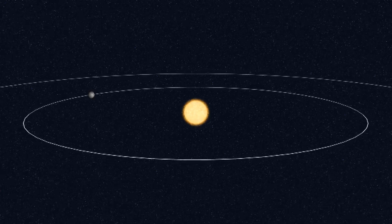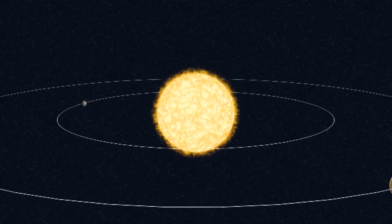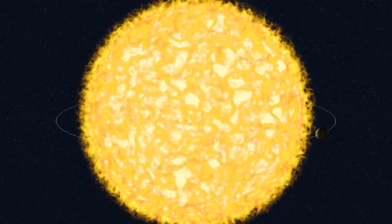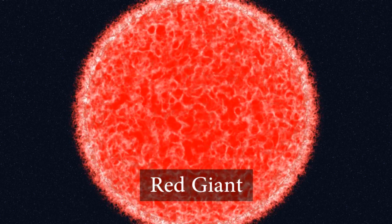The Sun will expand. Its radius will expand 200 times over. It will grow past the orbits of Mercury and Venus. The Sun will swallow up Mercury and Venus. As it grows, its surface will cool. Its color will change from yellow to red. It will become a red giant.